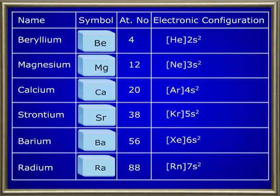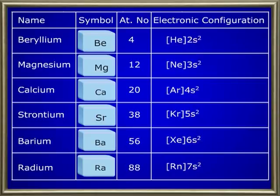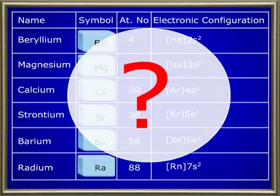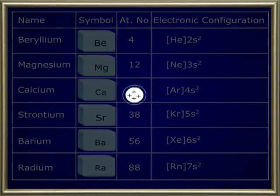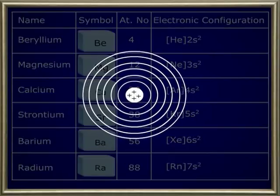What is the reason for this trend? If you notice the table again, observe that as you move down from beryllium to radium, the principal quantum number of the valence electron increases from 2 to 7 under the electronic configuration column. This means that each successive element has an extra shell as we move down from beryllium to radium, and this causes an increase in size. So remember that the atomic size of the alkaline earth metals increases as we go down from beryllium to radium.